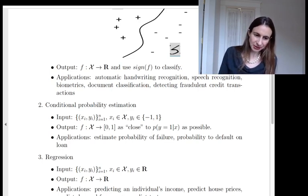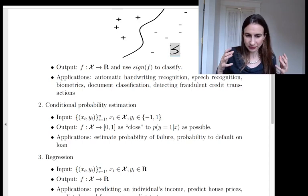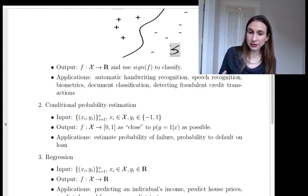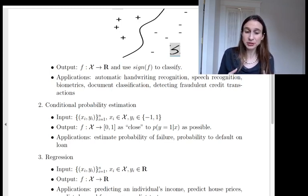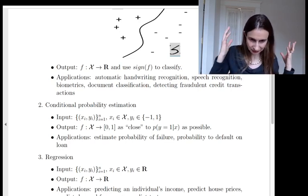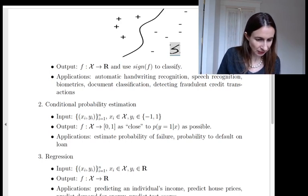Okay, so here, the applications are estimating probabilities, right? Probabilities of an airplane to fail based on the state of its parts, the probability for a person to default on their loan based on their statistics in their loan application, like their history of being able to repay their loans.